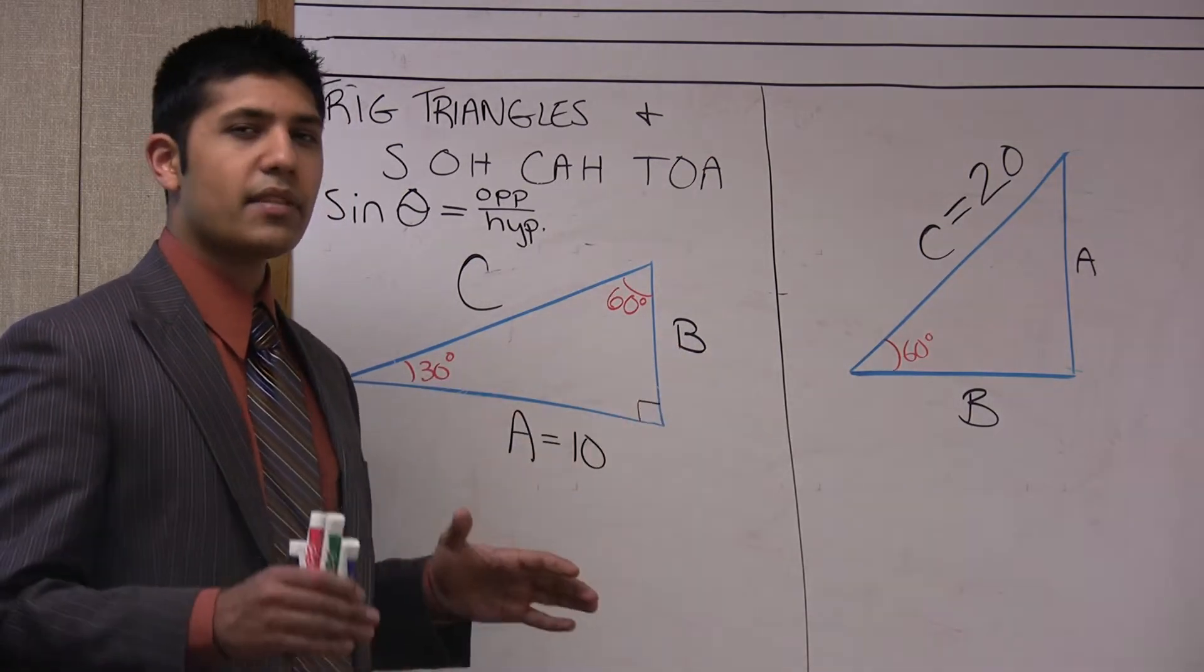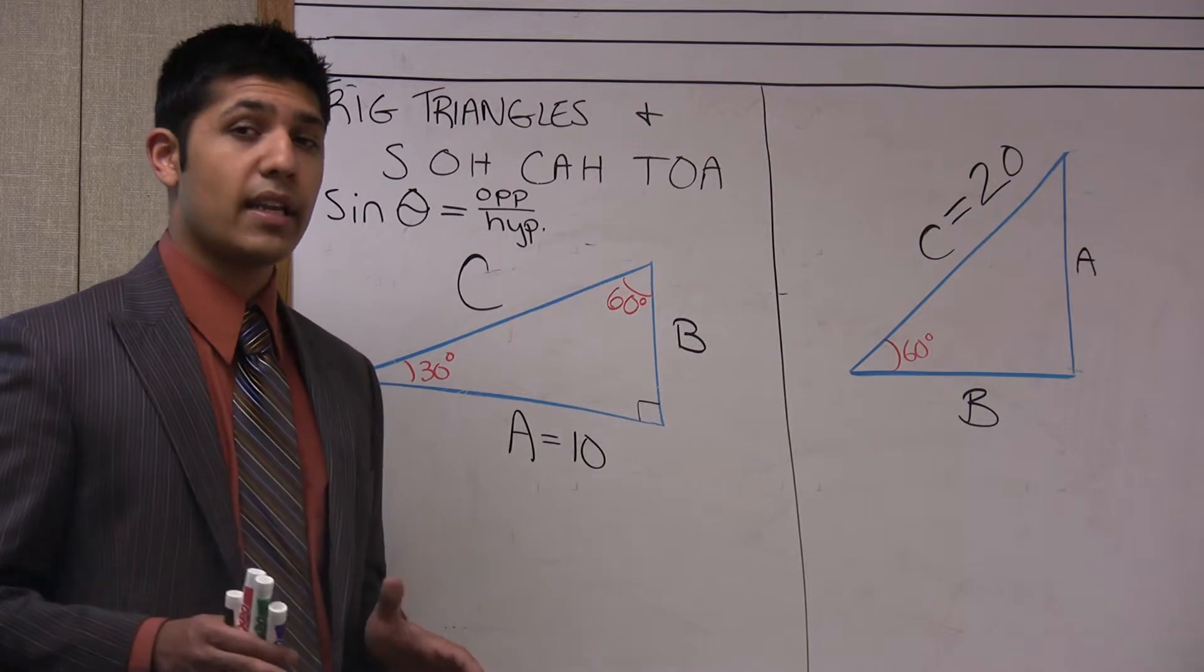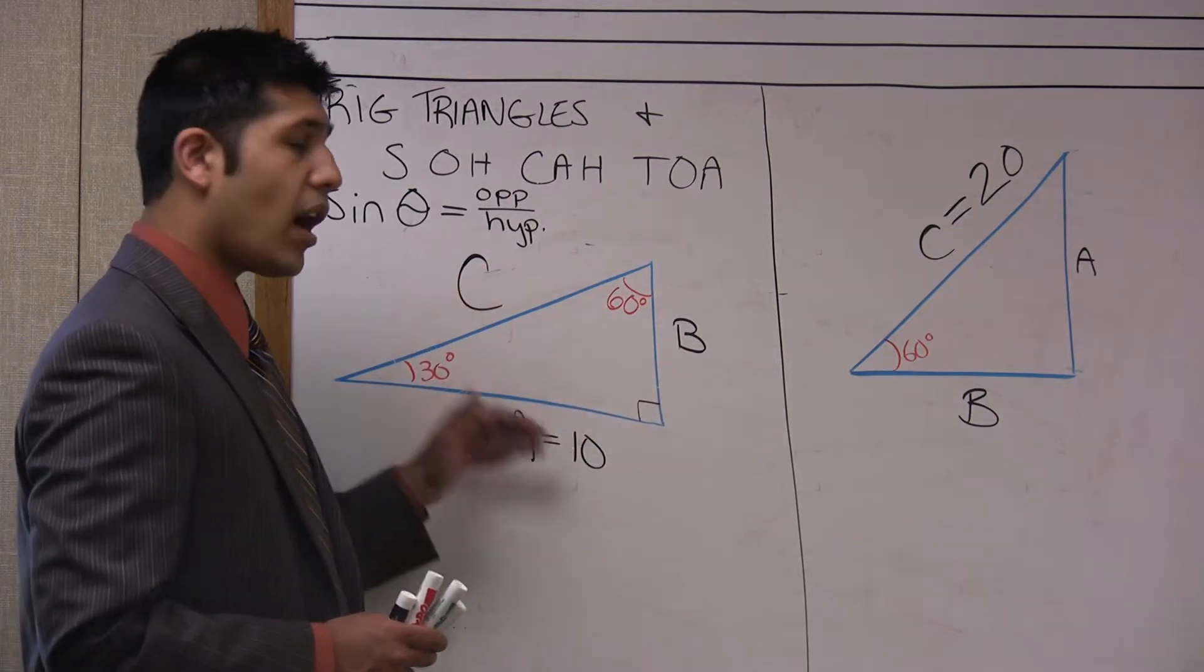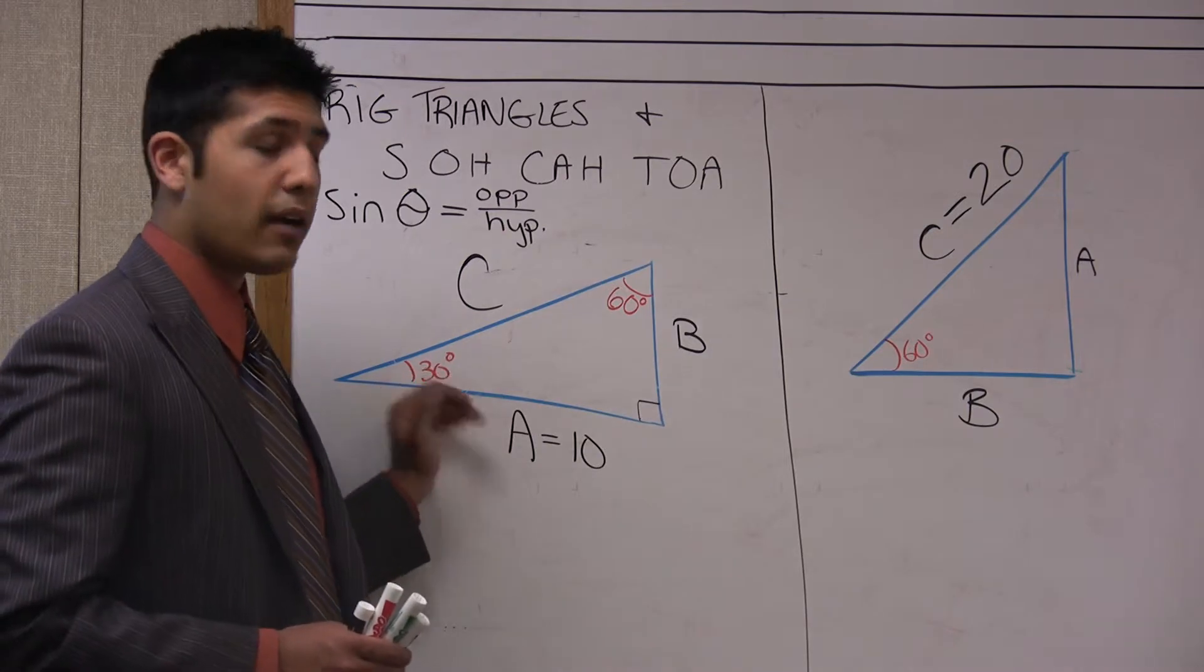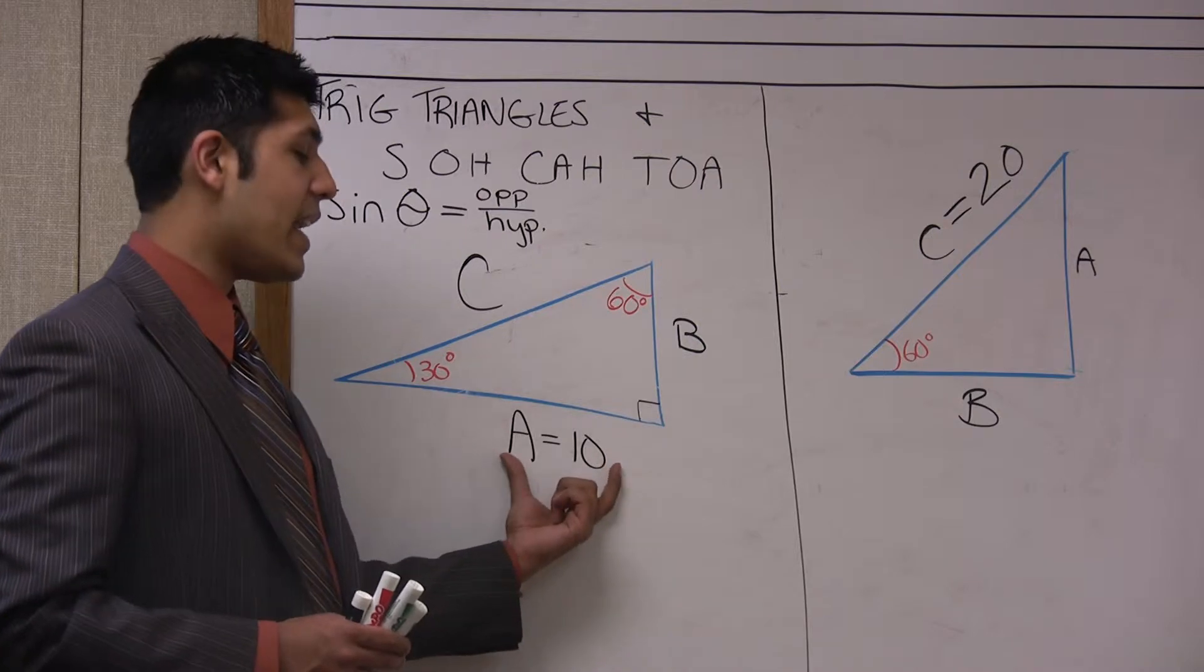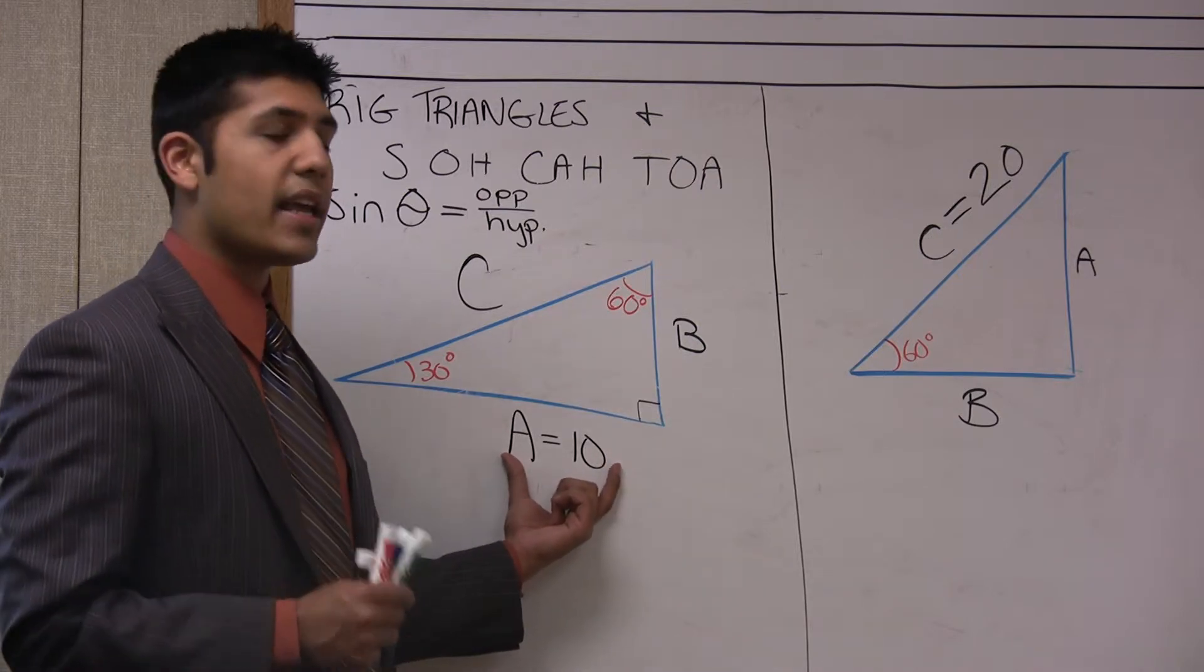That's really the first classification we need to get our students to understand—that they need to be able to label each side in regards to whatever angle they're working about. In this case it's the 30 degree angle, so we need to understand that side A here is adjacent to that angle.